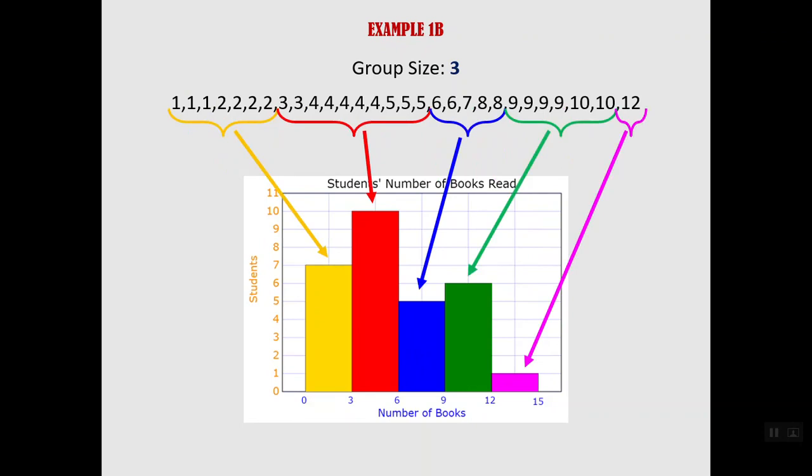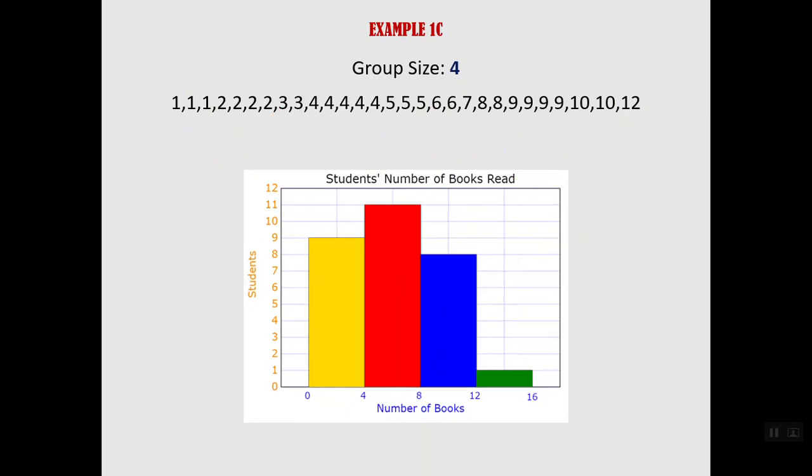So our histogram can look a little bit different depending on our bin size, our group size. And here's one more version where we've made even wider groups. Here our group size is 4.